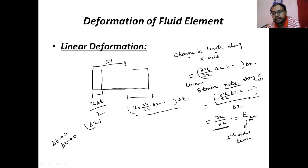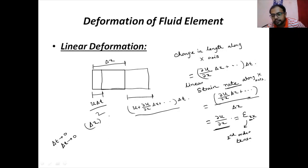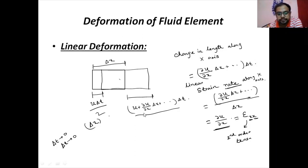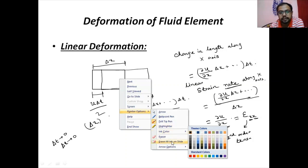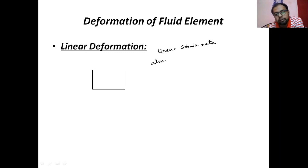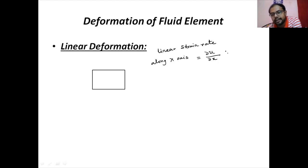Why is it a second order tensor? Because the first index is for the orientation of the area, i.e., the normal direction to the area, and the second index is the stress direction. So we rewrite: linear strain rate along x-axis is equal to du/dx. The unit of it is inverse seconds, because it is meters per second divided by meters.